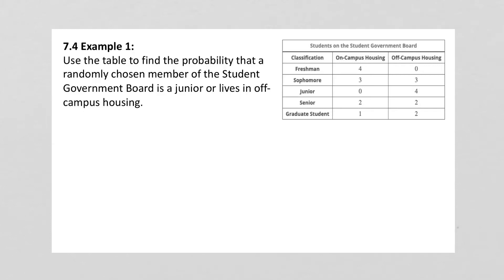We have two additional examples for Section 4. Use the table to find the probability that a randomly chosen member of the student government board is a junior or lives in off-campus housing. So, probability of a junior or off-campus housing.